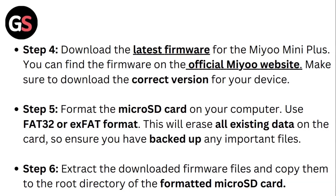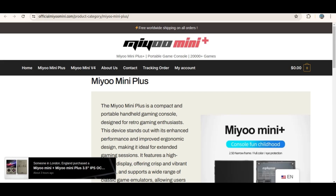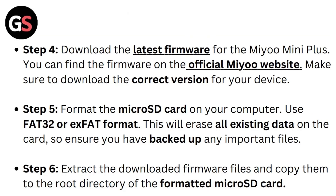Step 4: Download the latest firmware for the Mio Mini Plus. You can find the firmware on the official Mio website. Make sure to download the correct version for your device.